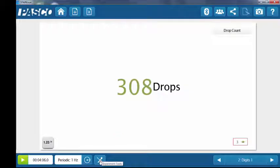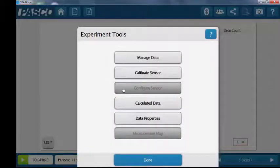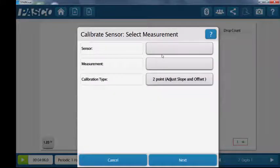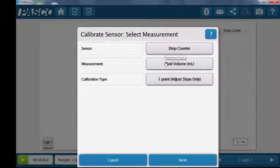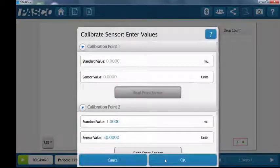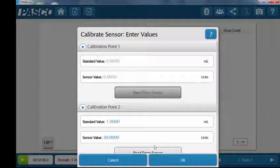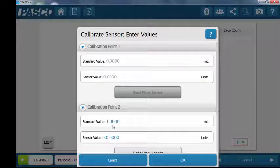To enter your calibration data, simply go to the experiment tools button. Click on calibrate sensor. Change the sensor to drop counter if needed. Click next. Calibration point 1 is automatically set to the default value of 0.